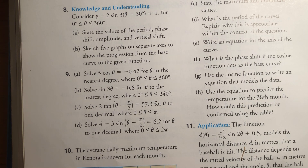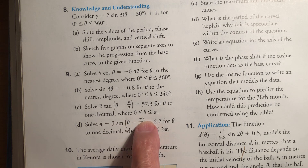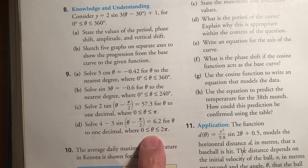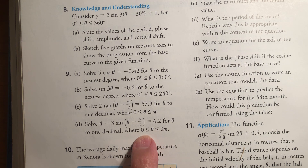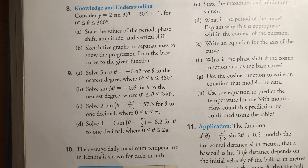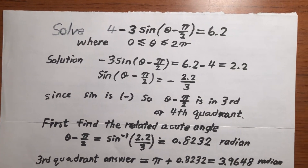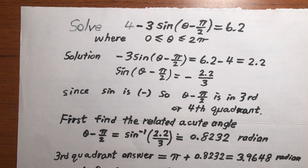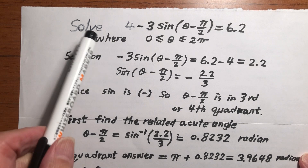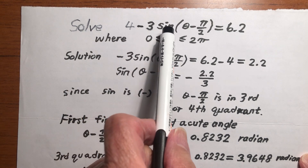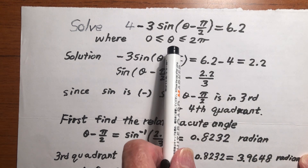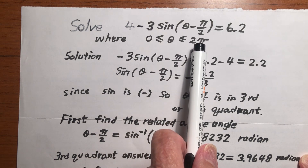So the question is question 9, part D. You solve this equation to find what theta is. The interval of theta is given — it's between zero and two pi. Let's proceed. The question is to solve this trigonometric equation, with the interval of theta between zero and two pi.